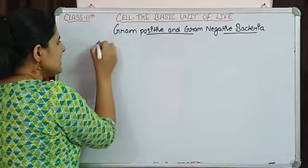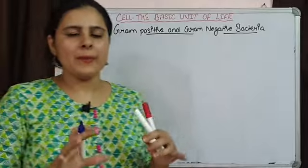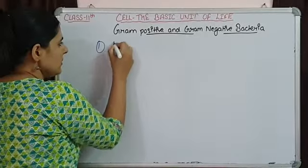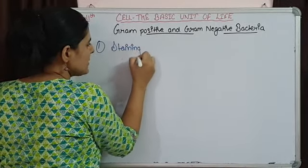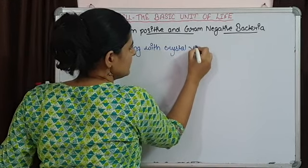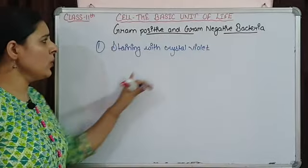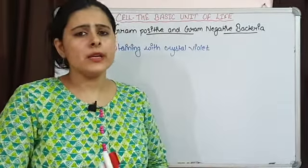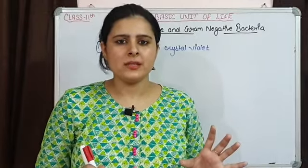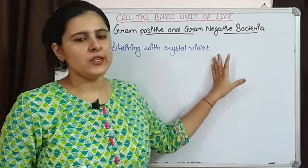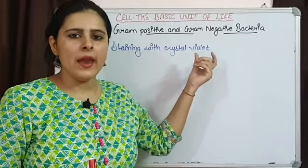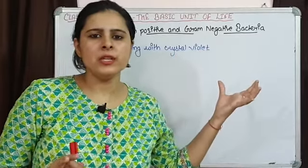Christian Gram firstly stained all the bacterial cells he had with crystal violet. This crystal violet gave almost a purple or violet color to the bacterial cells. All those bacteria got stained with crystal violet and became purple or bluish in color.